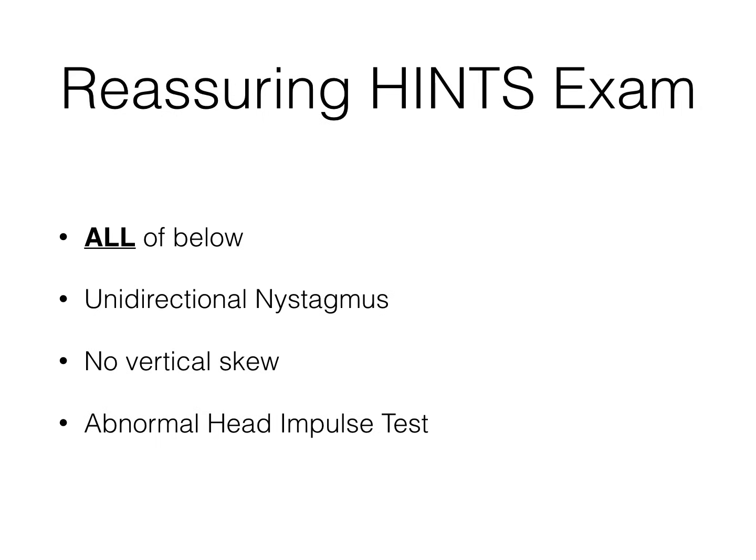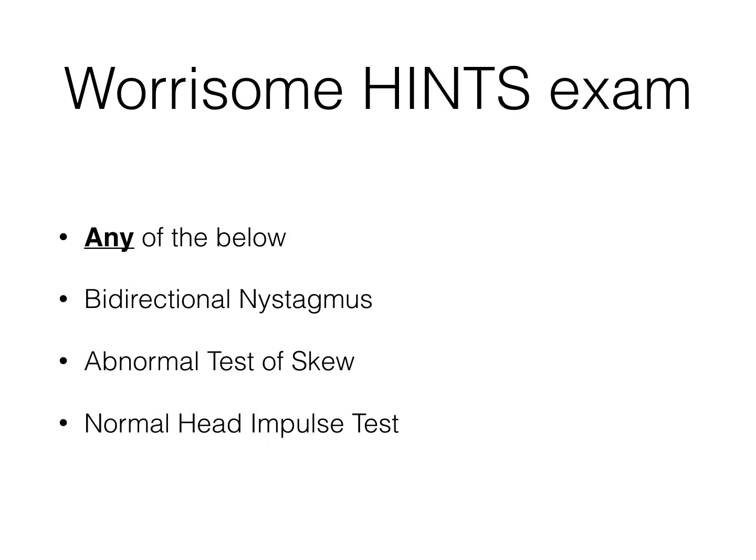So a reassuring HINTS exam requires all three components: you have to have unidirectional nystagmus, no vertical skew deviation, and an abnormal head impulse test. A worrisome HINTS exam if you have any of the following: direction-changing nystagmus, an abnormal test of skew, or a normal head impulse test.